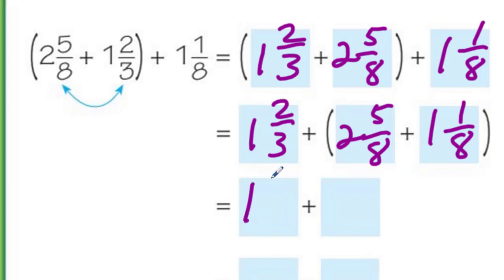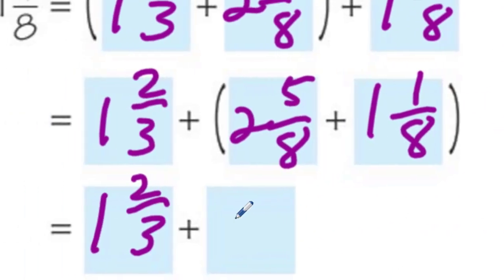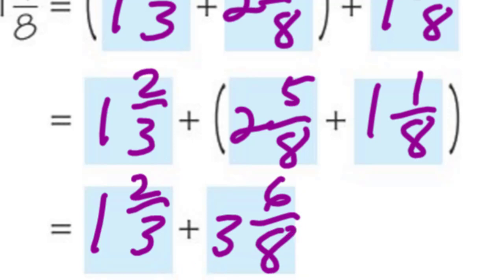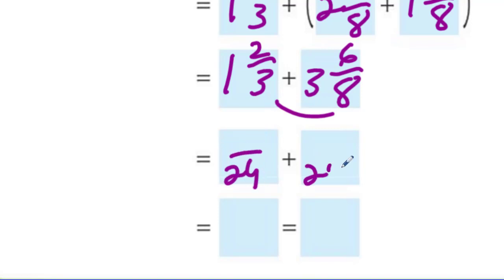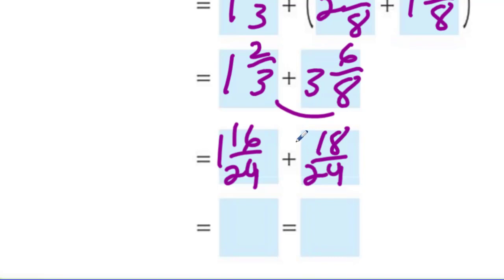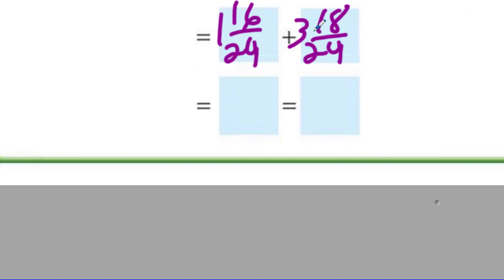Over here I have one and two-thirds. It says to use mental math to add the fractions with like denominators, so two and five-eighths plus one and one-eighth gives us three and six-eighths. Now we need to find an equivalent fraction for one and two-thirds and three and six-eighths. I multiply the denominators: three times eight is 24, so our common denominator is 24. To convert two-thirds: multiply the denominator by eight to get 24, and multiply the numerator by eight to get 16 twenty-fourths. To convert six-eighths: multiply the denominator by three to get 24, and multiply the numerator by three to get 18 twenty-fourths. Adding the whole numbers: one plus three gives four. Adding the fractions: 16 plus 18 gives 34 over 24. So we have four and 34 twenty-fourths.